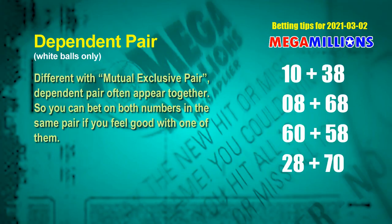Some numbers are mutual exclusive, while some are dependent — in the same dependent pair you can bet on both, because they often appear together in winning numbers of a draw. The white ball dependent pairs for the next draw are: first pair — 10 and 38; second pair — 08 and 68; third pair — 60 and 58; fourth pair — 28 and 70.